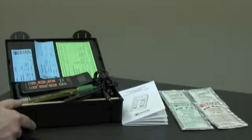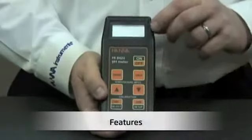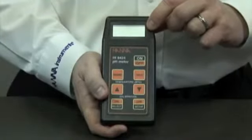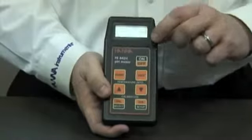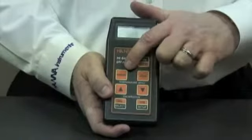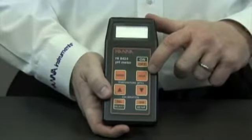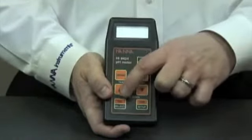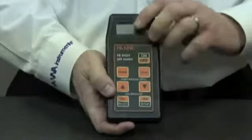Now I'd like to show you some features of the unit. Here we have the LCD display, which shows pH, millivolt, and temperature in either Celsius or Fahrenheit, the on-off button, the range button, the hold button to hold the readings, temperature buttons for manual temperature compensation, calibration button, and setup button.